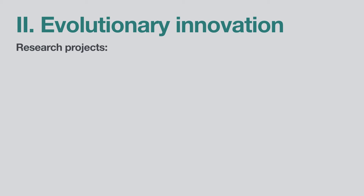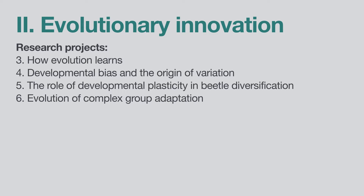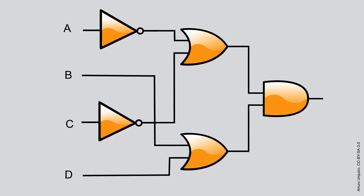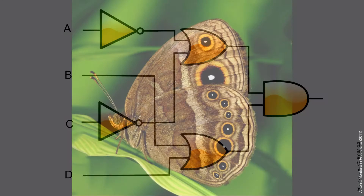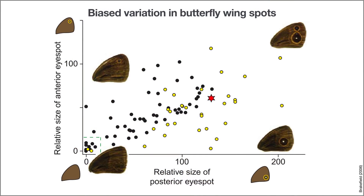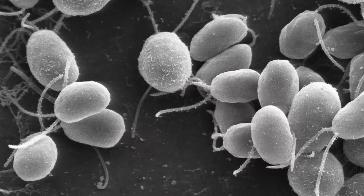Our second theme, evolutionary innovation, explores when, how and why new variants appear. These projects include the use of new exciting methods adopted from computer science to model the evolution of development. Investigations of how widespread developmental bias is using experimental and comparative analyses, and a study of how developmental mechanisms contribute to the emergence of multicellularity.